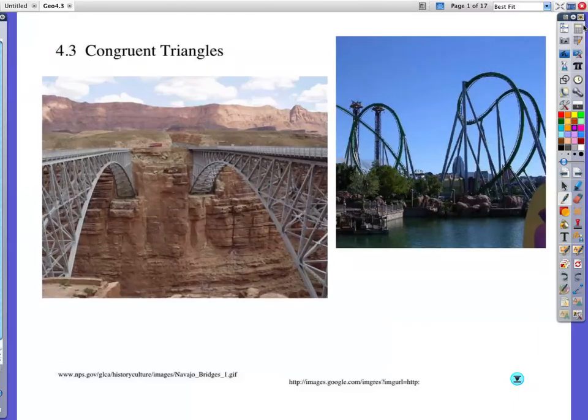We are looking at section 4.3 on congruent triangles. This picture doesn't even look like it has triangles in it, but if you look at the support beams, here's your bridge, there's kind of the arch there, but these form triangles. And even this roller coaster, it looks all curvy, but these are probably triangular shaped support beams.